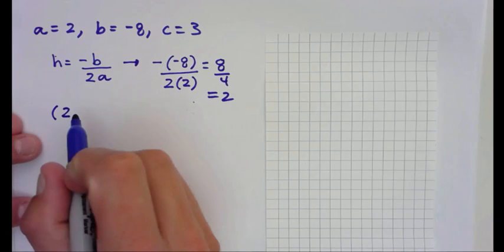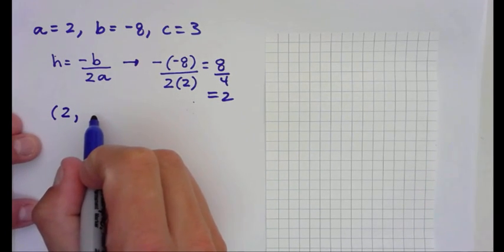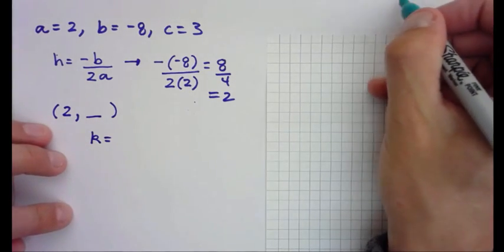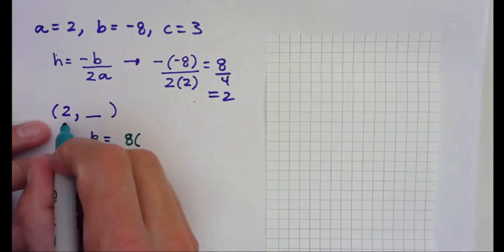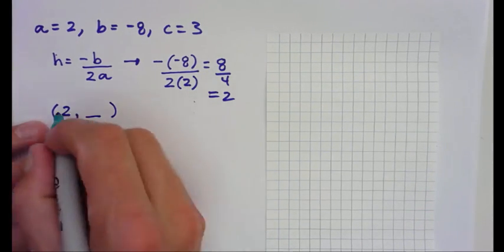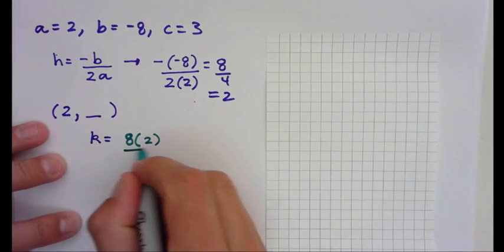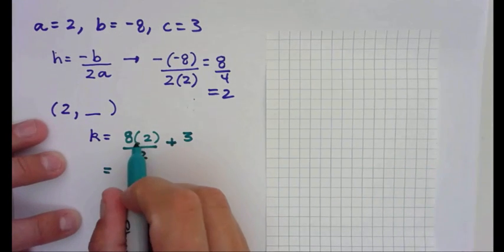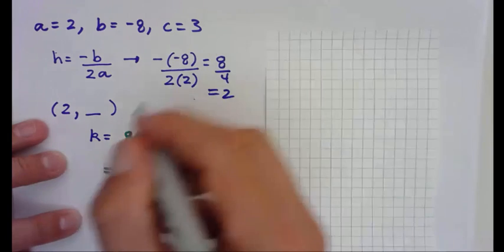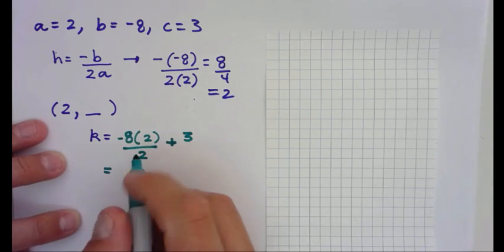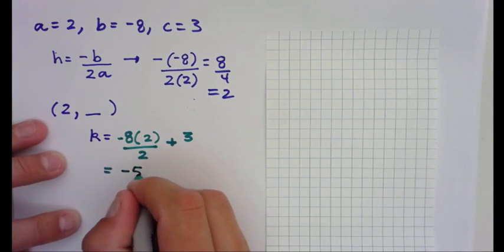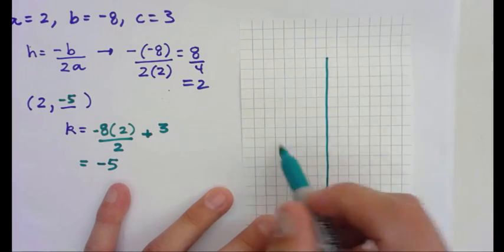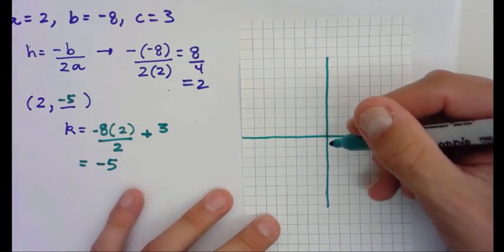Now I've got the first point of my vertex. I've got to find the k value. k is found using bx over 2 plus c, where x is the h coordinate, which is 2. So that's negative 8 times 2 over 2, which is negative 16 over 2, giving negative 8. Negative 8 plus 3 is negative 5. So my vertex is (2, negative 5).